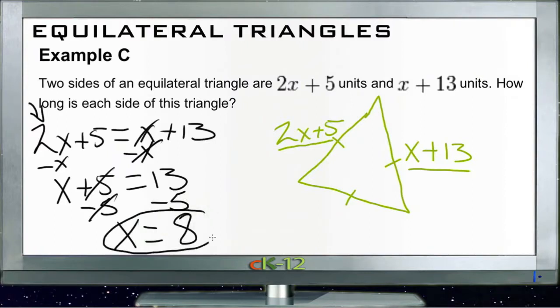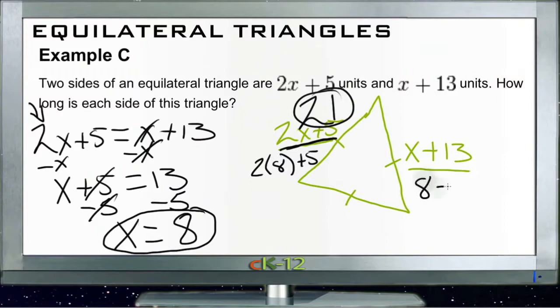So if x is 8, then this side here is 2 times 8 plus 5, or 16 plus 5 which is 21 units. And this side over here is just 8 plus 13 which is 21 units.